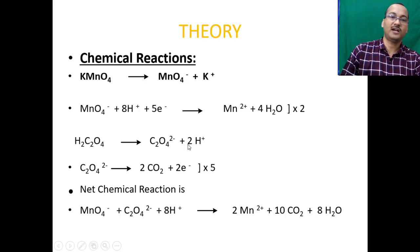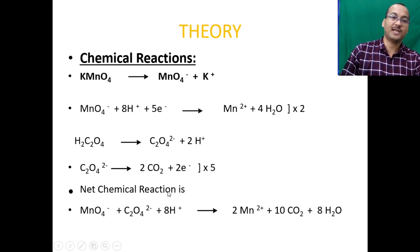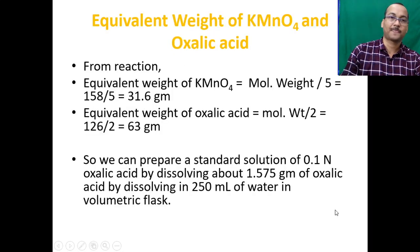Oxalic acid (H₂C₂O₄) ionizes to give oxalate ion (C₂O₄²⁻) and two H⁺ ions. The oxalate ion is oxidized to carbon dioxide, losing two electrons. In KMnO₄, five electrons are involved; in oxalic acid, two electrons are involved. The net chemical reaction is: MnO₄⁻ + C₂O₄²⁻ + 8H⁺ → 2Mn²⁺ + 10CO₂ + 8H₂O.